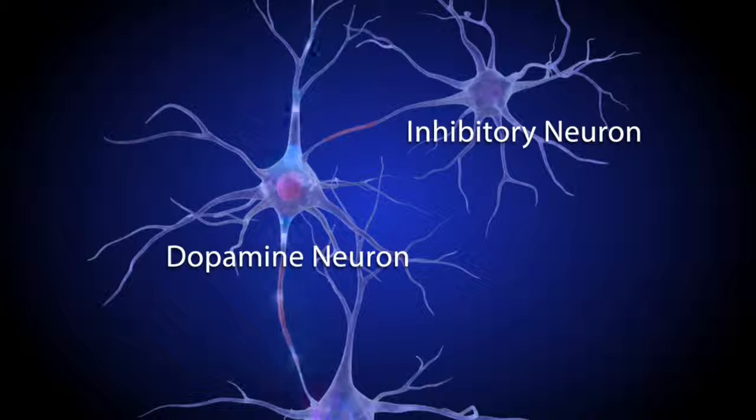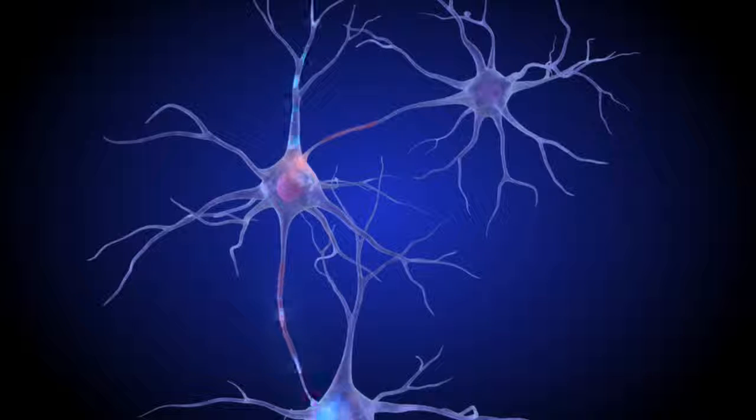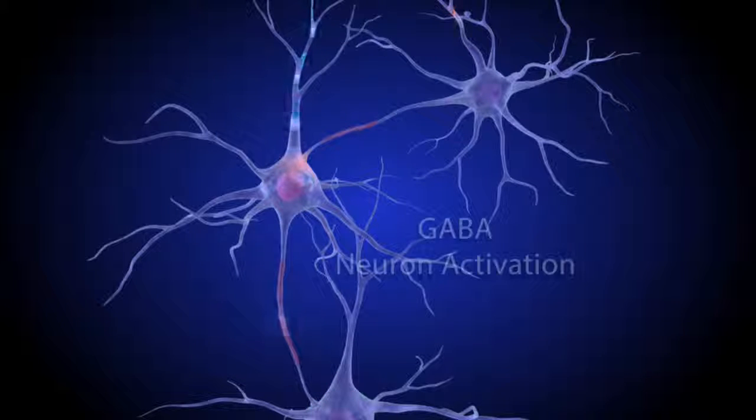For example, an inhibitory neuron near the dopamine presynaptic cell can reduce the amount of dopamine delivered to the synapse by releasing the neurotransmitter GABA.